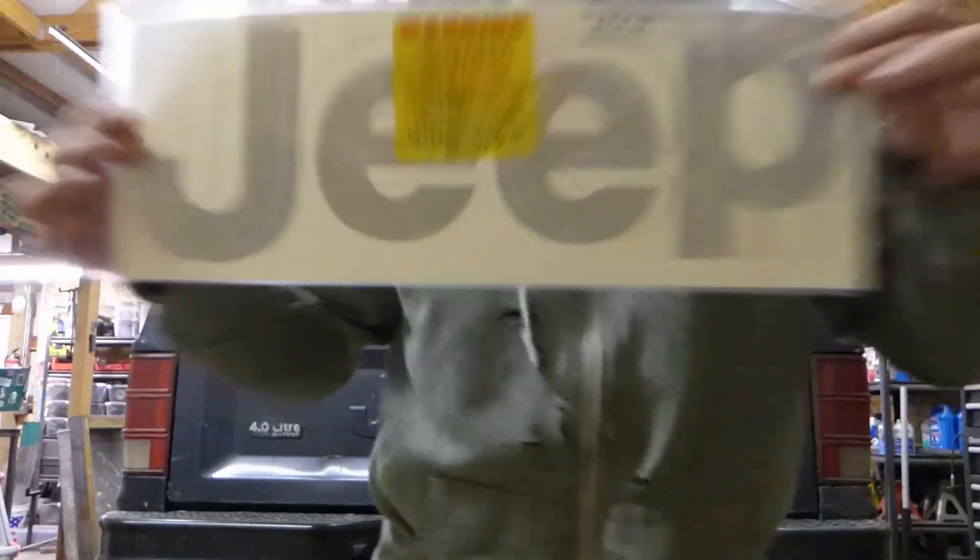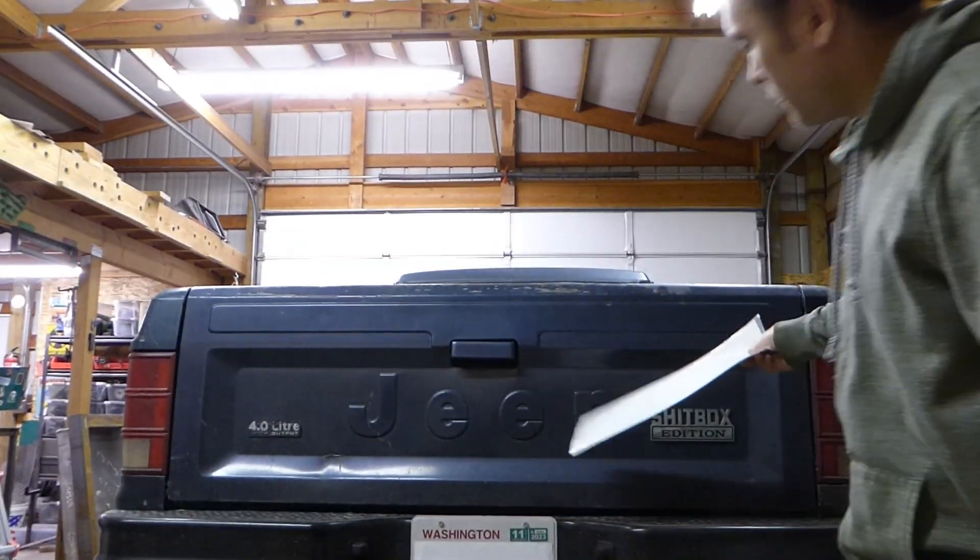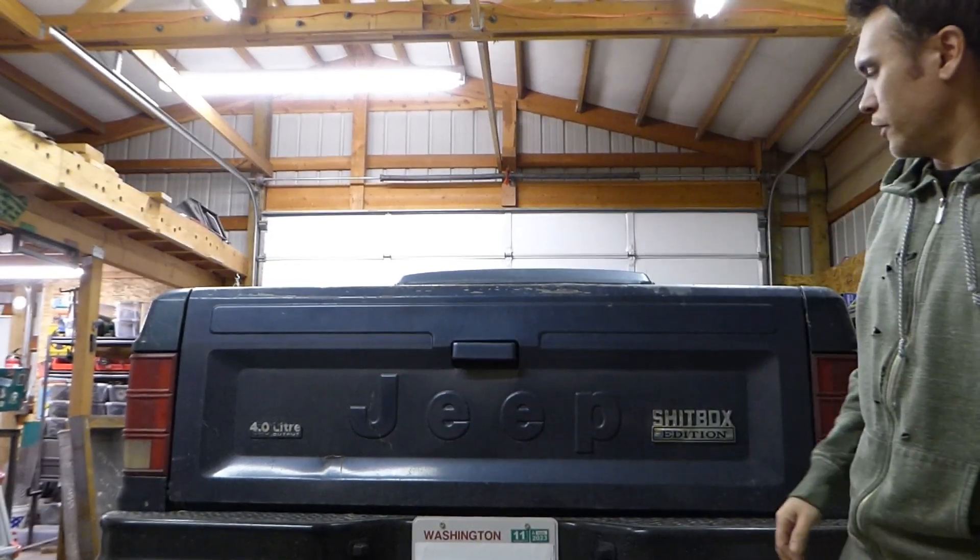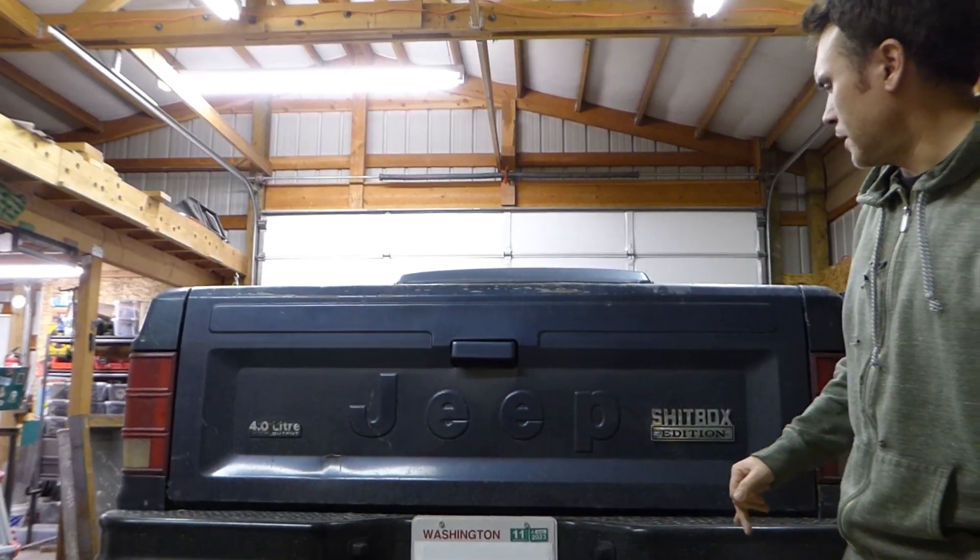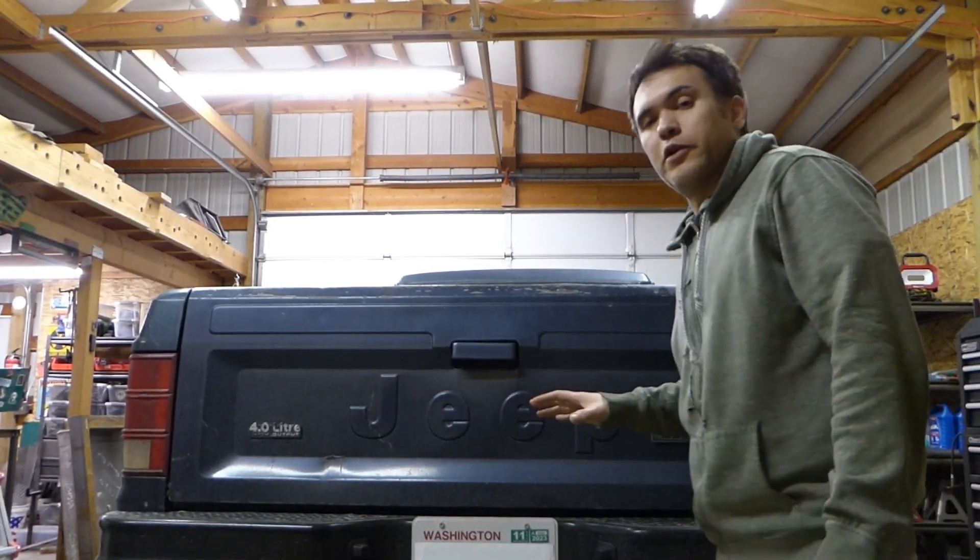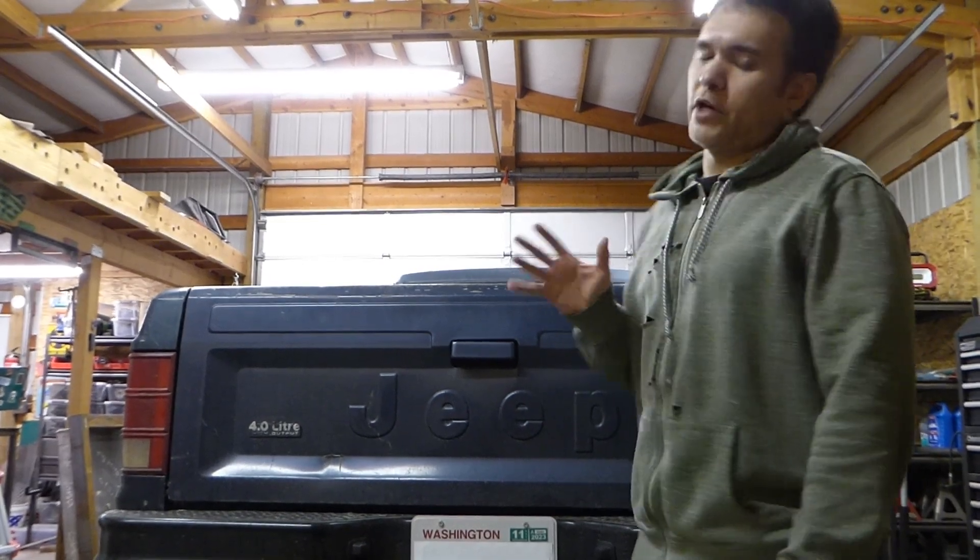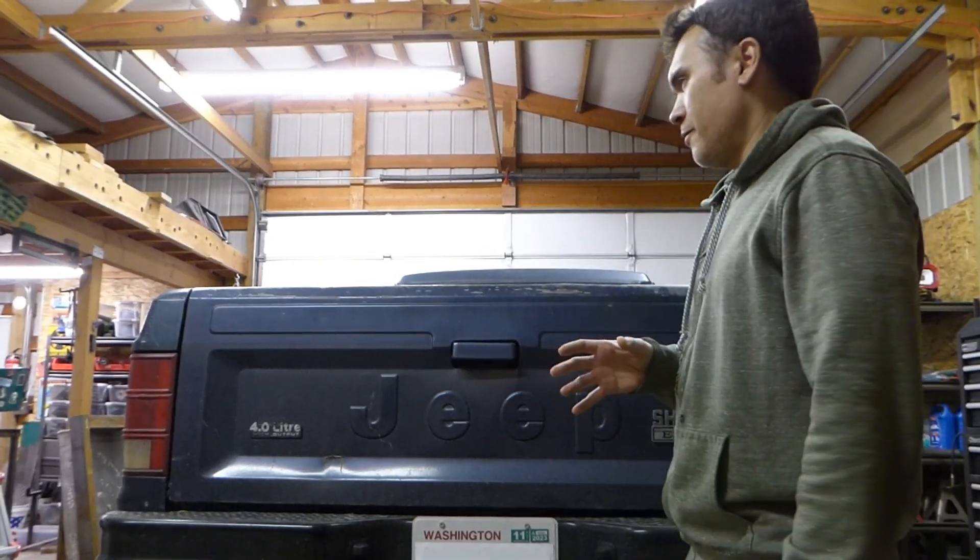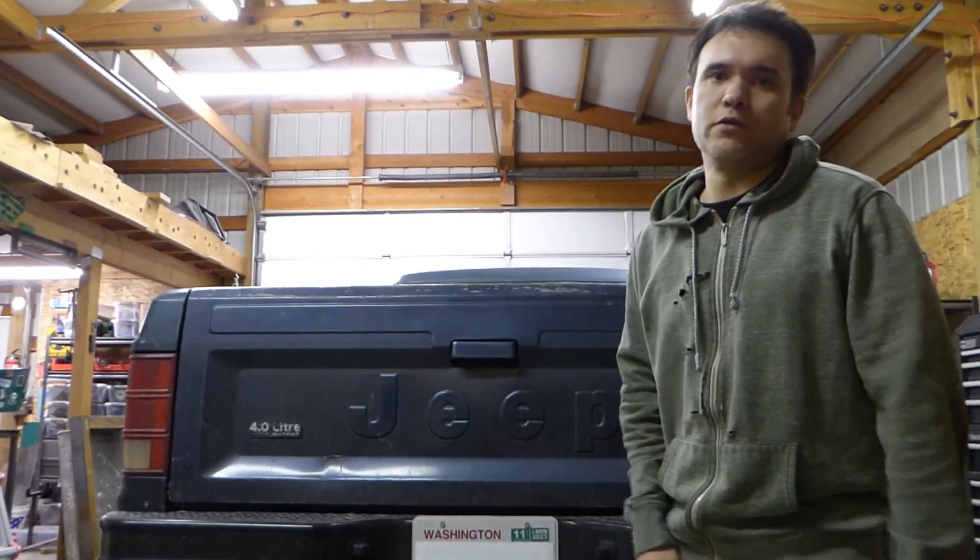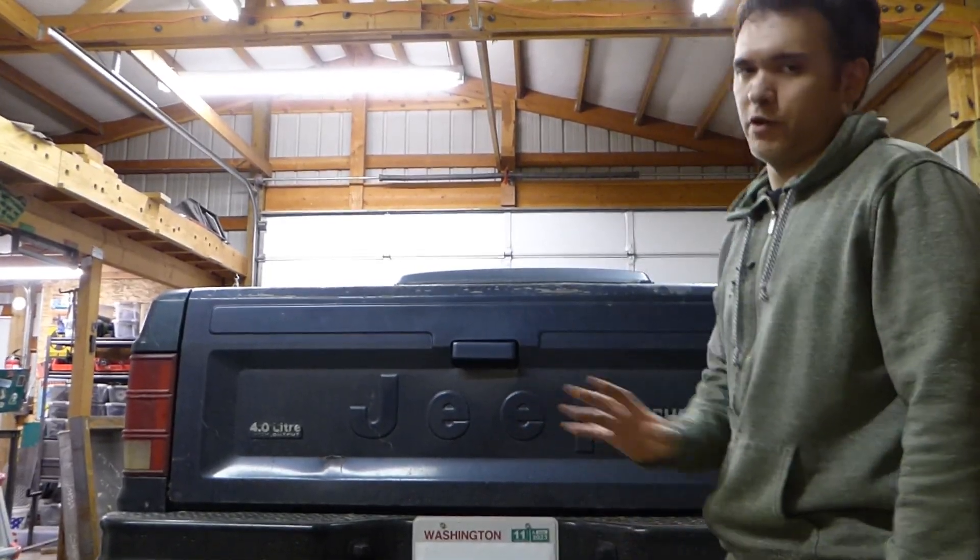Jeep Comanches came with these raised letters on the tailgate here and I think most of them came with stickers on them from the factory. I'm doing this video today because there's already videos out there showing how to put vinyl on cars, but those dudes are always working with like a brand new car with perfect paint, perfect sheet metal.